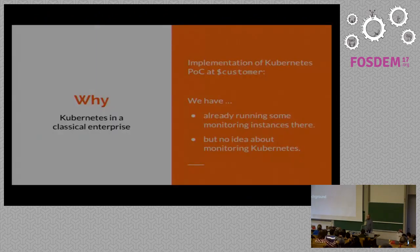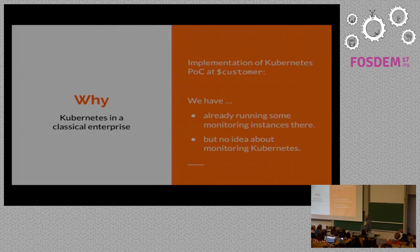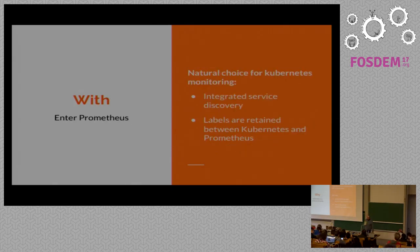Now for the real thing — the background. I'm a Nagios guy. What should I do with Kubernetes monitoring? Obviously, Nagios doesn't work in such an environment. But our DevOps team at Consol had the chance to implement a proof of concept of a Kubernetes environment — to be more precise, an OpenShift environment — at a customer, some unknown Munich car manufacturer. We already had monitoring instances running there, so it was obvious we should try to monitor Kubernetes. But we had no clue how to do that, especially with Nagios — no way. So here is where Prometheus comes in.